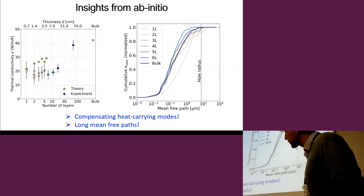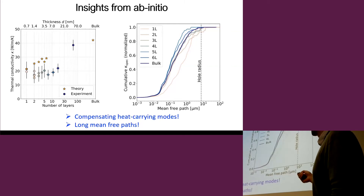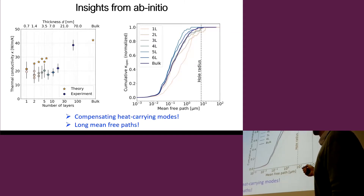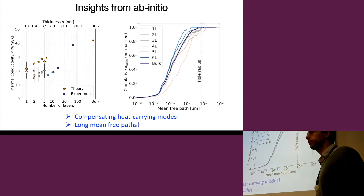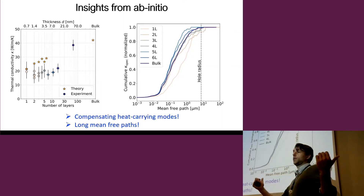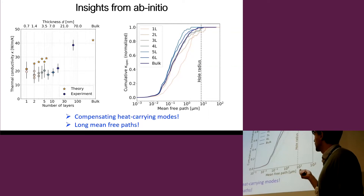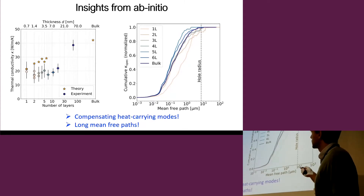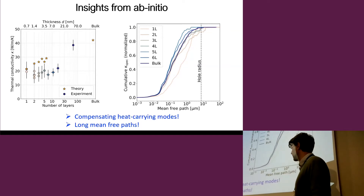The mean free path cumulative distribution shows that for thicker films not much changes, but for the monolayer almost half the heat is carried by modes with a mean free path of about one micron — remarkably long for a sub-nanometer-thick film. This also confirms the importance of using large hole radii (50 microns in our case): with a 1–2 micron hole, one would clip the mean free path of the flexural mode, artificially affecting the measured thermal conductivity. So it is essential to perform these measurements on large holes.